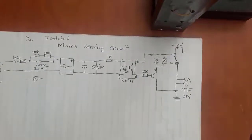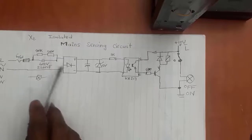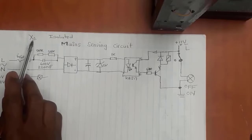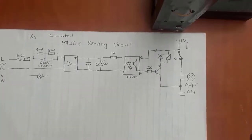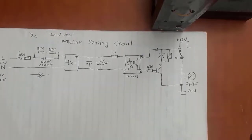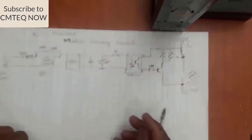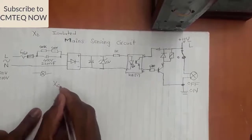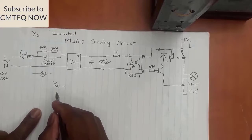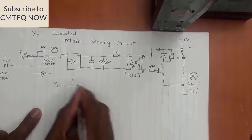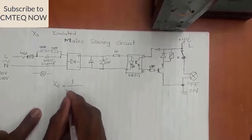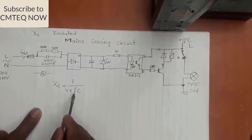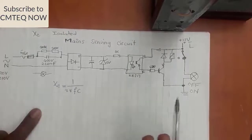Now we need to do another calculation - how to calculate the current limited by XC, the capacitive reactance. It's very simple to calculate. XC is the capacitive reactance given by one over two pi F C, where F is the frequency of your mains and C is your capacitor value.